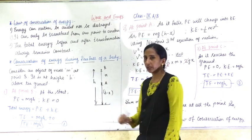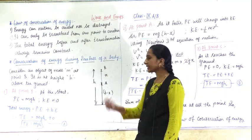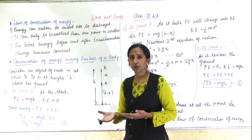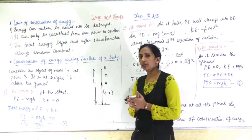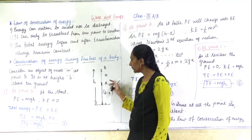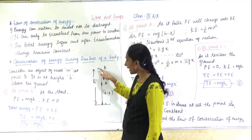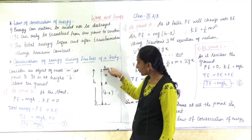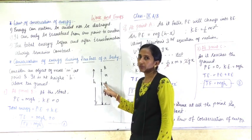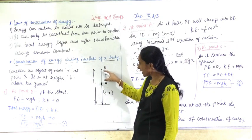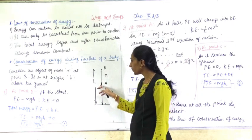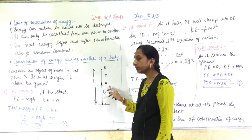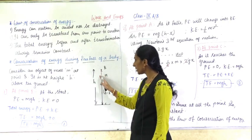Now the object has traveled from point B to point A, covering distance X. While traveling, potential energy gets converted into kinetic energy. The total height was H, and since the object has moved distance X downward, the remaining height is H minus X. So the potential energy at point A becomes MG(H − X).